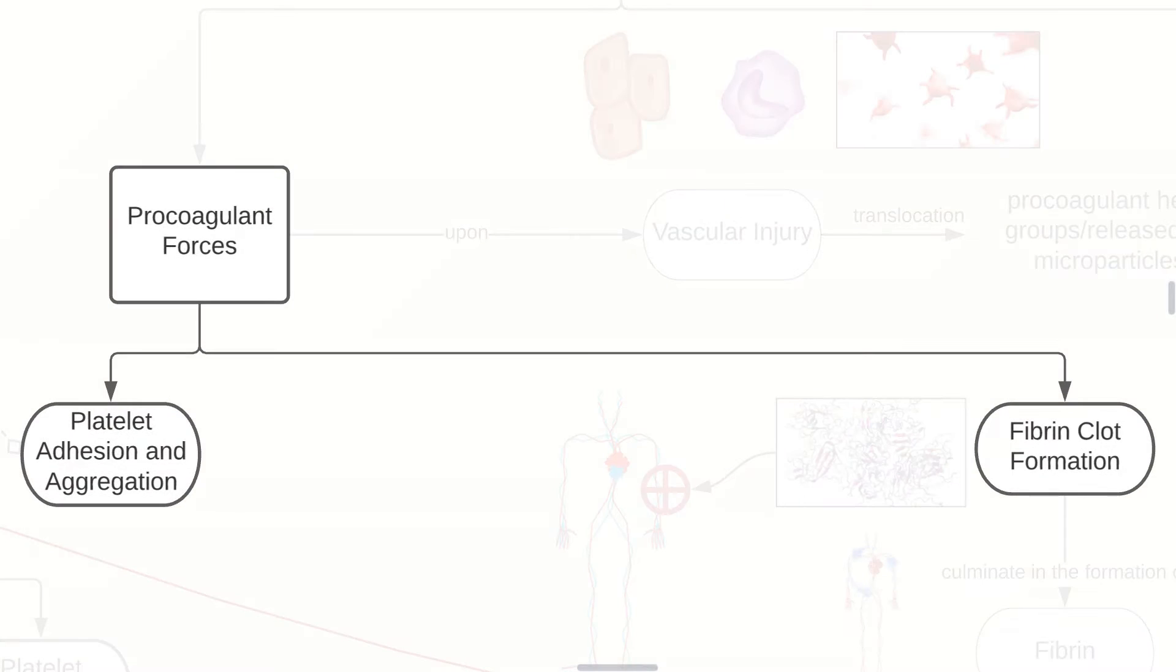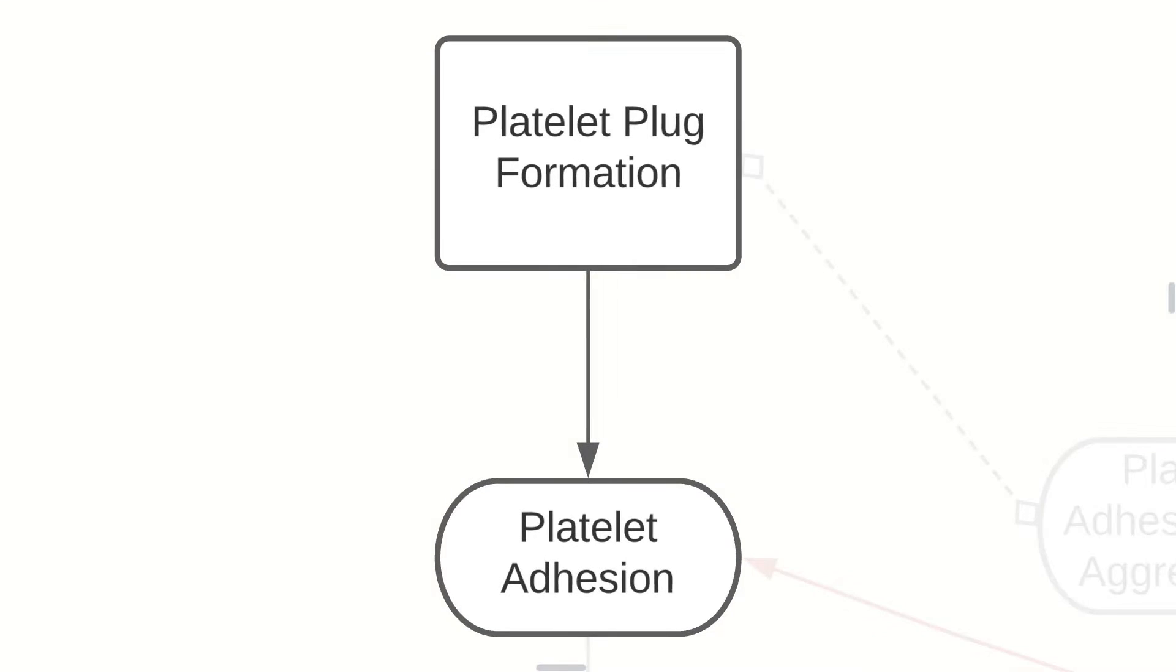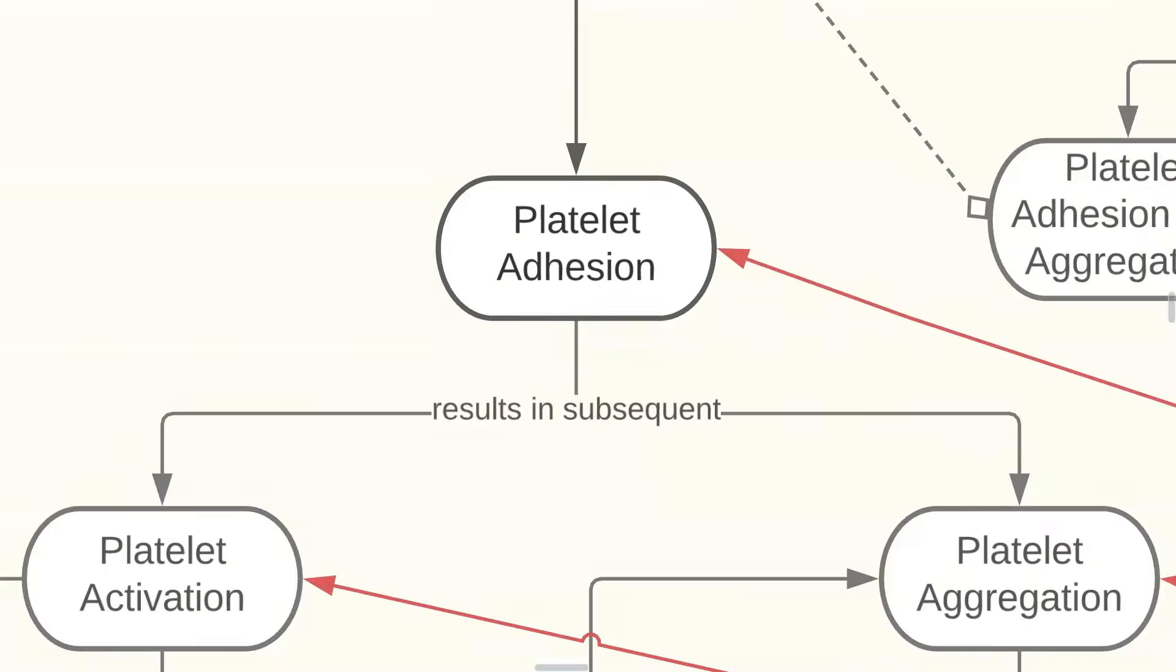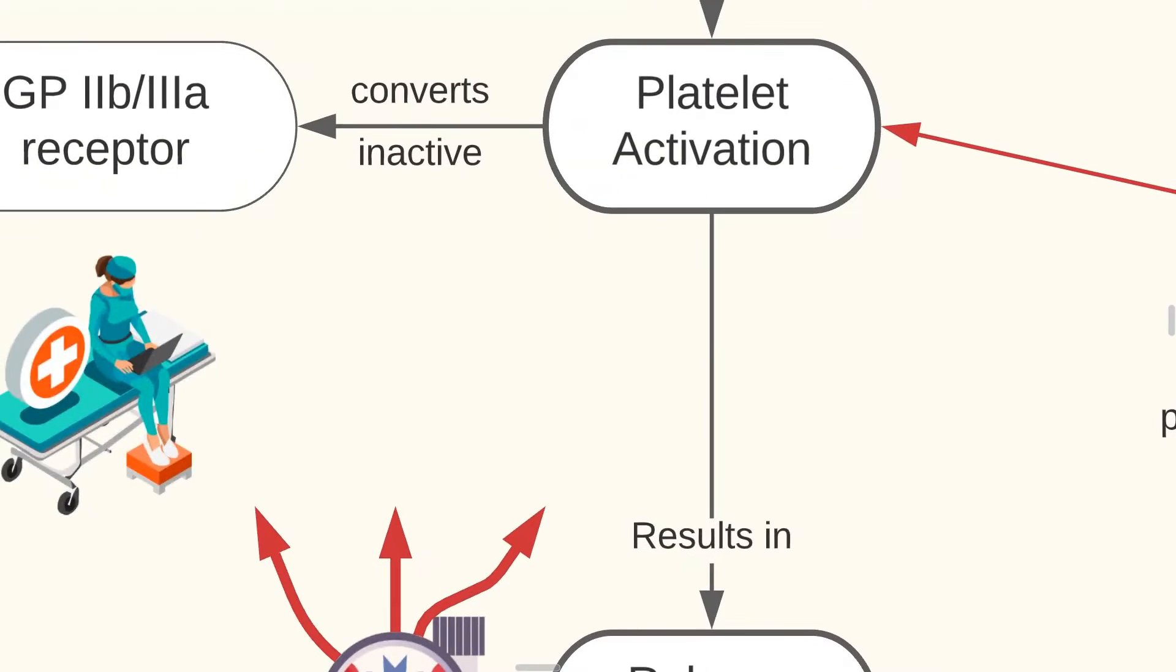Now let us talk about the procoagulant forces in proper. First the platelet adhesion and aggregation, and fibrin clot formation. Platelet adhesion and aggregation begins with a platelet plug formation, which is then subsequently followed by platelet adhesion, that results in subsequent platelet activation and aggregation.